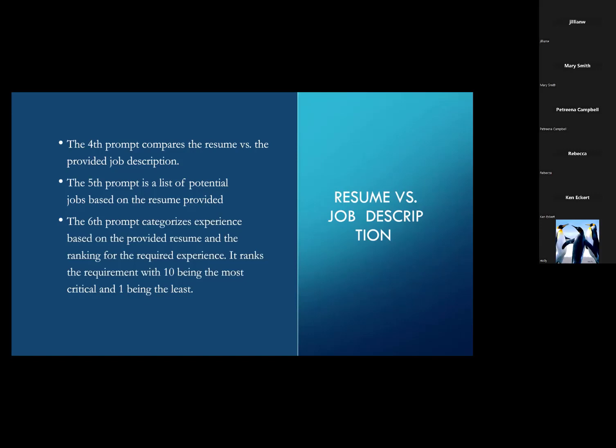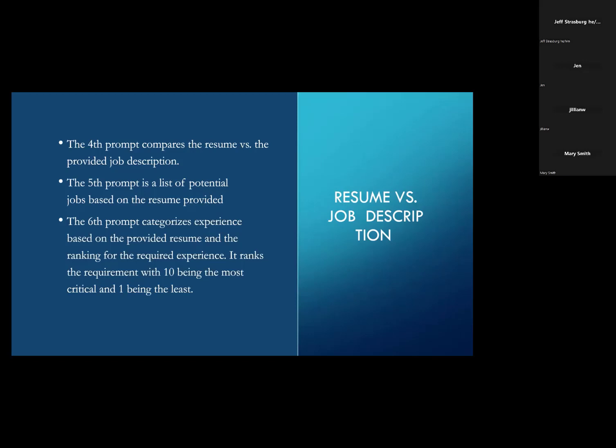I call the next step a 'means test' — a table with three columns. The first column is the critical skills the employer is looking for that you're missing. The third column is a ranking from 1 (lowest) to 10 (most critical). In the middle is information — resources you can utilize to gain that experience. St. Louis County Library came up as one of the biggest resources, and we found a person could get 8 of 10 critical elements through the library.